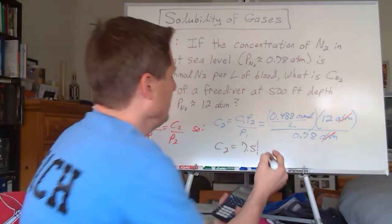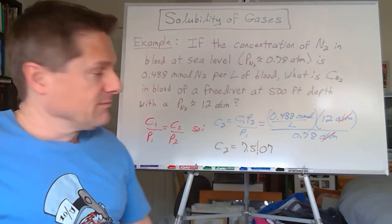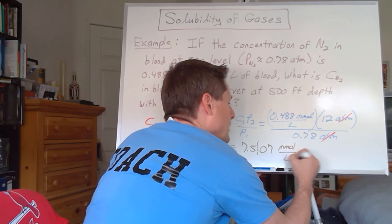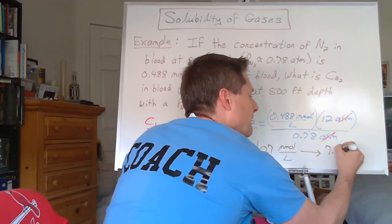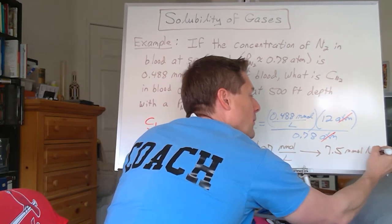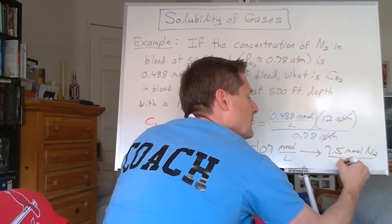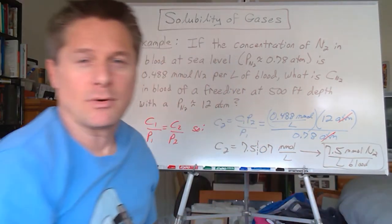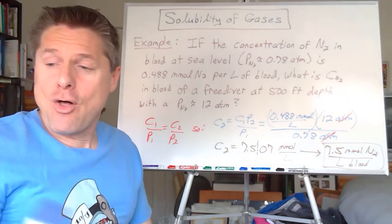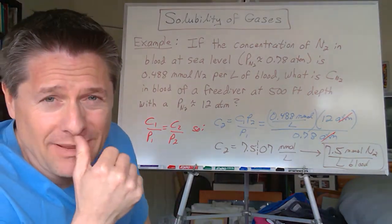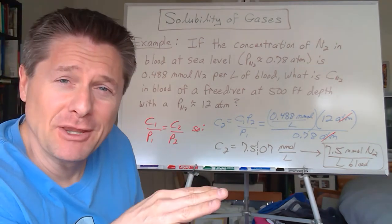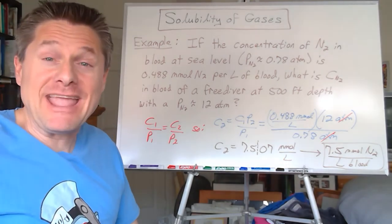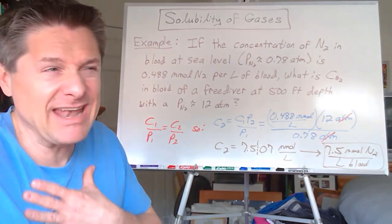So C2 will be 7.5, there's my two sig figs, and so that'll round to 7.5. That'll be millimoles per liter, and if I round that, that'll be 7.5 millimoles of nitrogen per liter of blood. That's a lot of dissolved inert gas in your blood. Let's have a fun little segue and talk about the rapture of the deep, the bends, some interesting ramifications that you may have experienced. I didn't experience the bends.